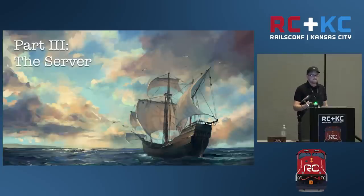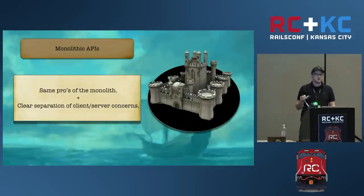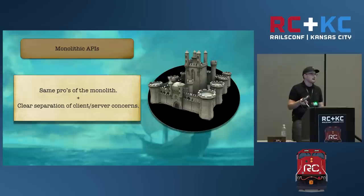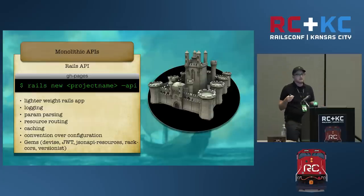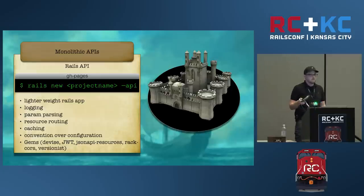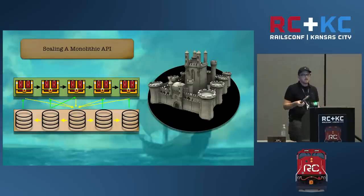Let's talk about the server, which means we should start by talking about monolithic APIs. Monolithic APIs have many of the same pros of the monolith that we discussed at the beginning, but the key is that we've removed some of the cons by removing the client-side concerns. We can easily build a monolithic API using the new Rails 5 API, which gives you many of the same benefits we've come to know and love, like convention over configuration, while still being lighter weight than a full Rails app. Scaling a monolithic API is very similar to how we would scale our normal monolith. But at some point, your team will start to grow and that leads us to talk about microservices.